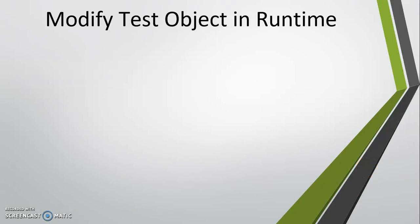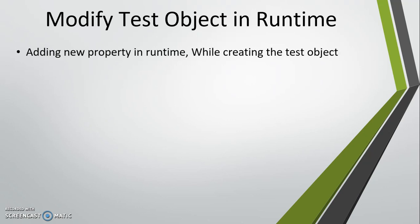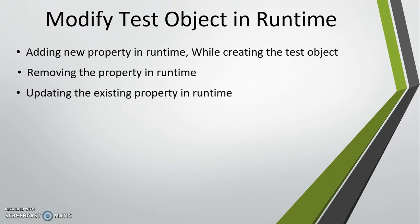Hello everyone. In our previous video we discussed how you can create a test object during runtime. Now in this video I am going to discuss how you can modify the property of the test object during runtime — that is how you can add a new property to a test object, how you can remove a property from the test object, and how you can update the existing property of a test object.